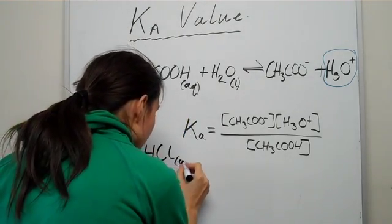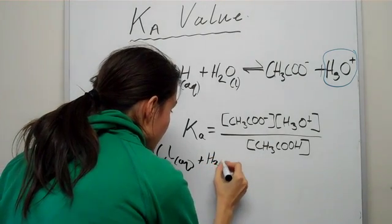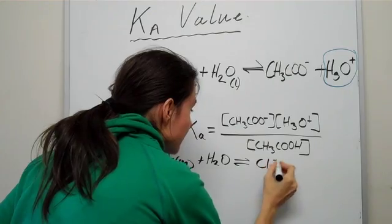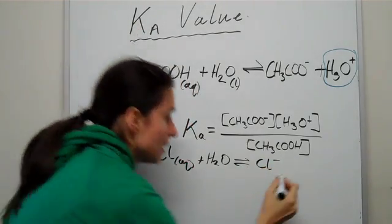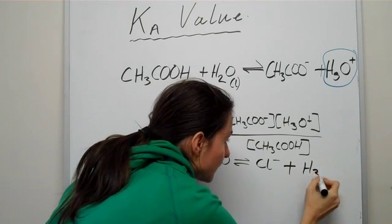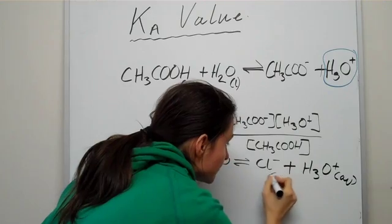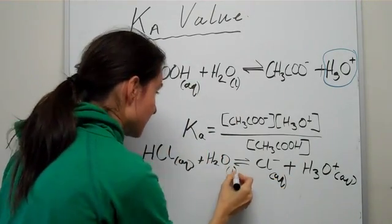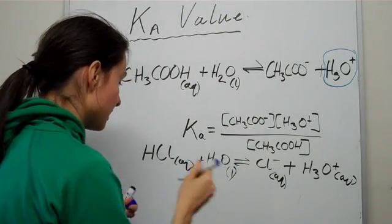It will produce Cl minus as its conjugate base plus H3O plus. This is in aqueous, this is aqueous as well, and that's liquid.